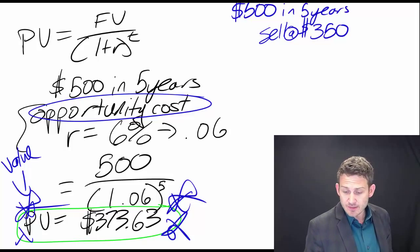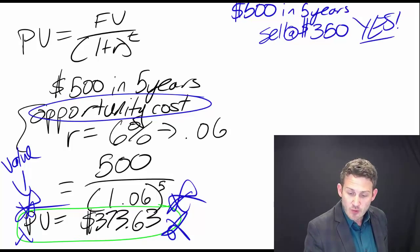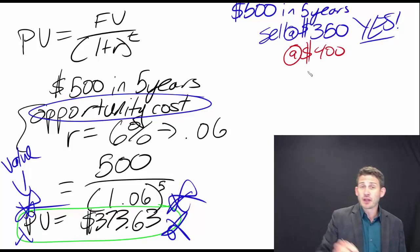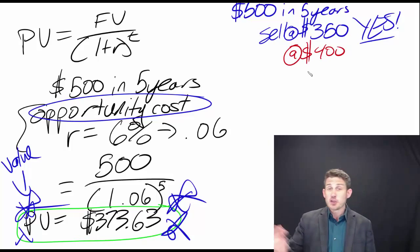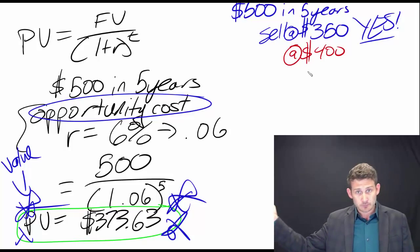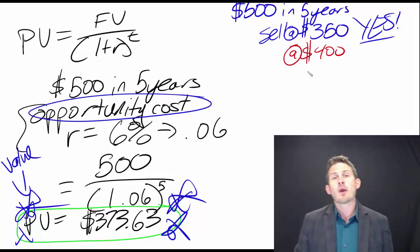However, if I said I will sell this cash flow to you for $400, you think it's worth $373.63 but I'm trying to sell it to you for $400. What are you going to tell me? Get out of town, right?